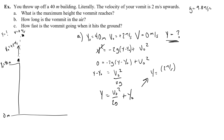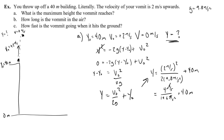Plugging in: the initial velocity is 2 squared over 2 times 9.8, plus 40. That's 4 meters squared per second squared over 19.6 — the units cancel — which is 0.204, so about 0.2, plus 40 meters. So the maximum height the vomit reaches is 40.2 meters, relative to the ground at zero — which is just above the 40-meter building top.